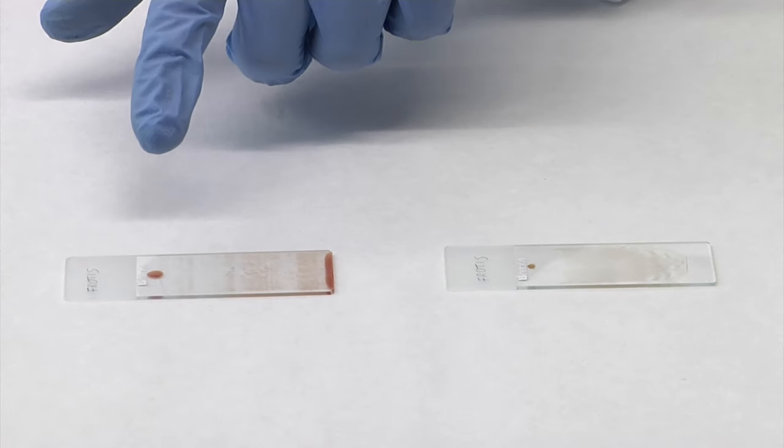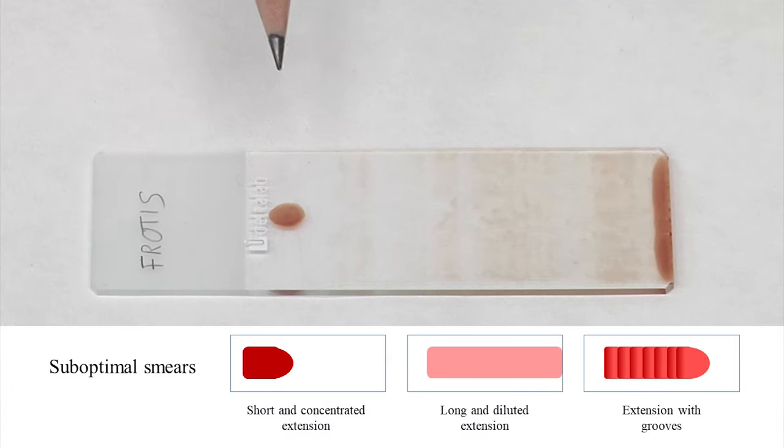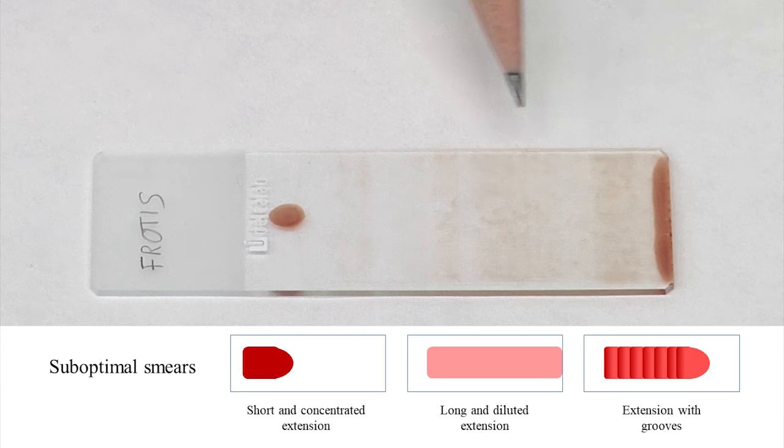Here, we show you a smear that is not optimal for its staining with Giemsa. We can observe several defects. An excessively large drop of blood was deposited. Grooves that appear because the slide did not slip with even velocity and pressure. There are areas with an excessive accumulation of erythrocytes and areas where they are deformed. There is an accumulation of blood at the end, due to the excessive size of the drop deposited.